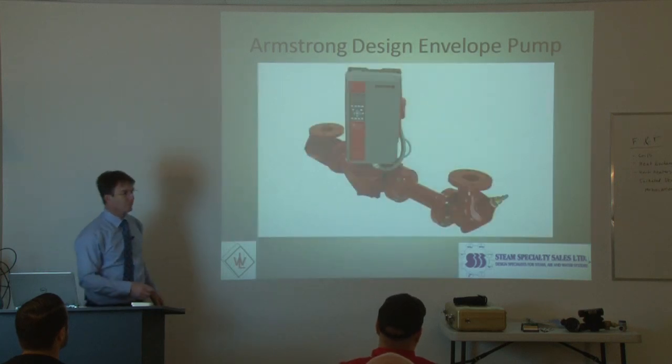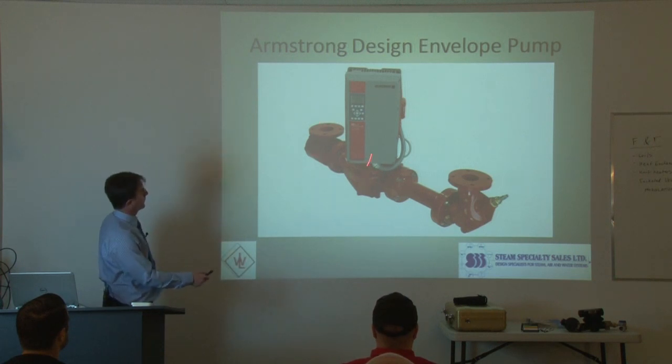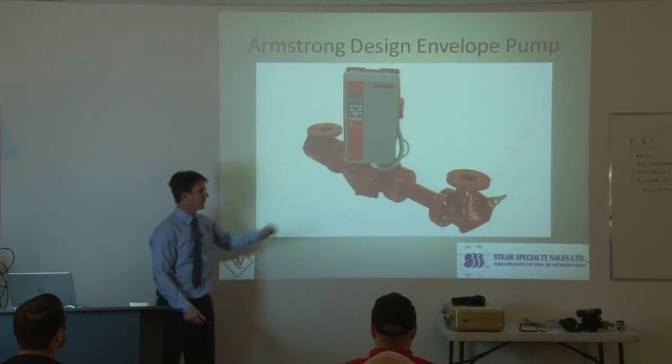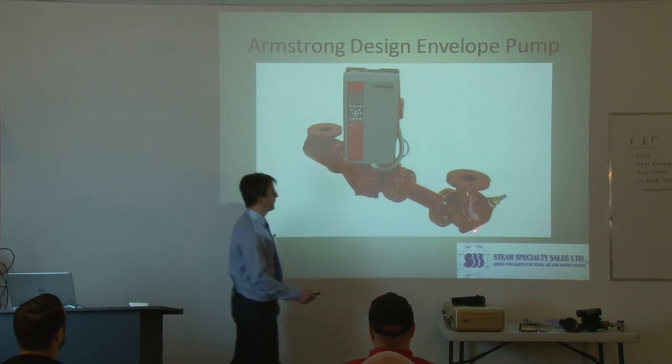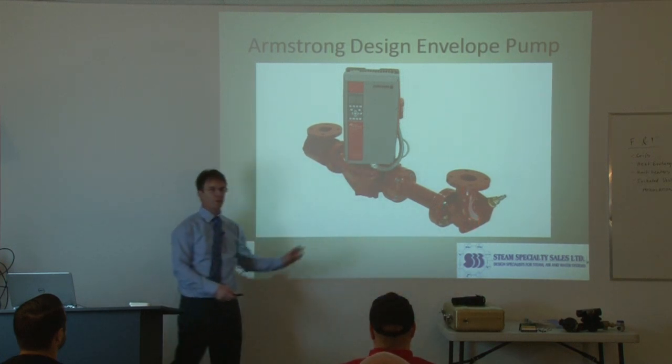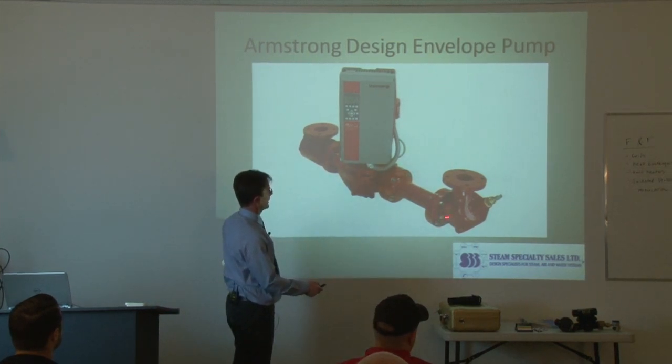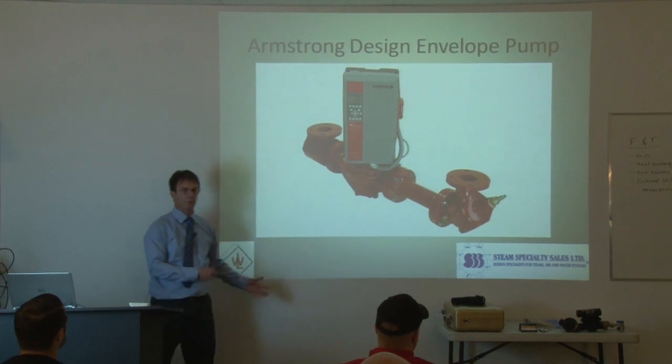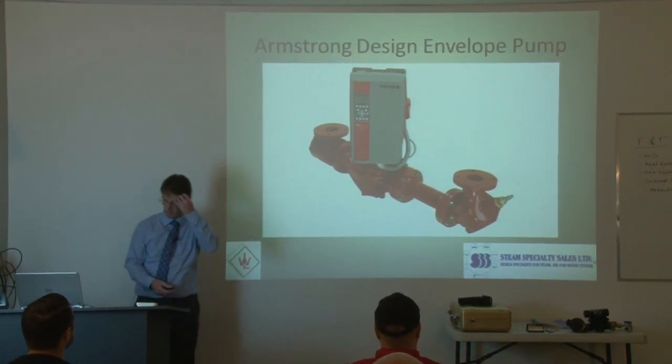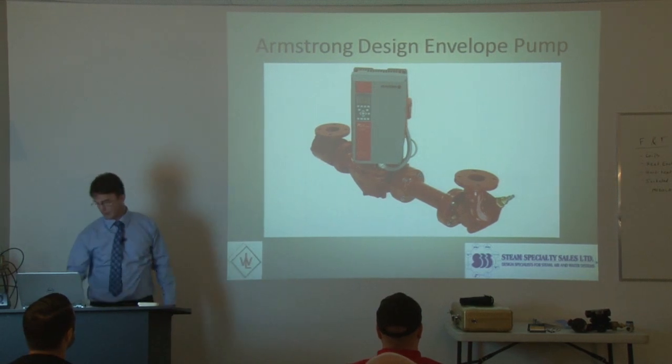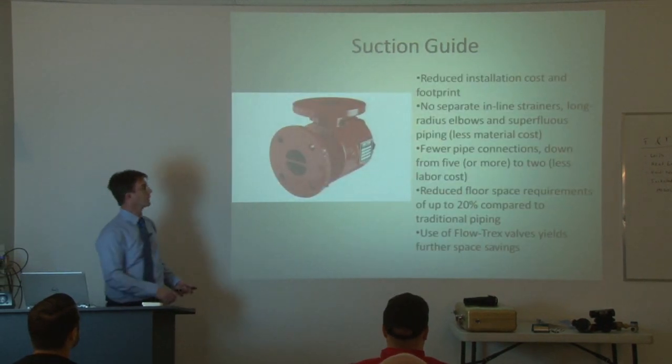So that's your system as it looks when it's installed. So we have suction guide, a vertical inline pump. And then at the outlet, we have what some people call the triple duty valve, but Armstrong calls them a tri-flex valve. So basically it has three functions. It's a check valve, a throttling valve, and an isolation valve. So you can do all three of those different functions. And it has a built-in speed drive mounted right on the side of the pump.